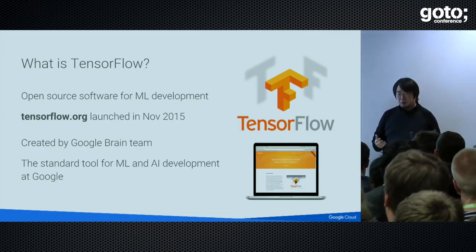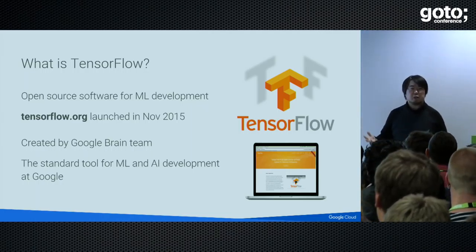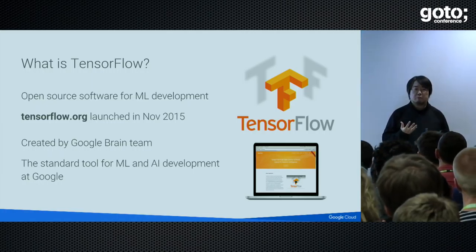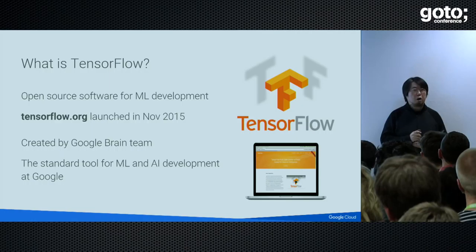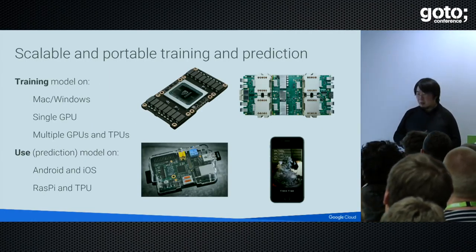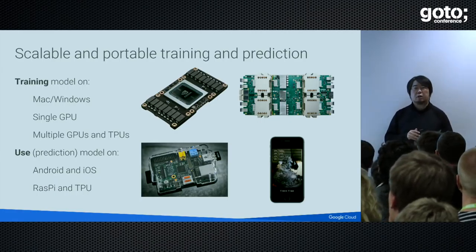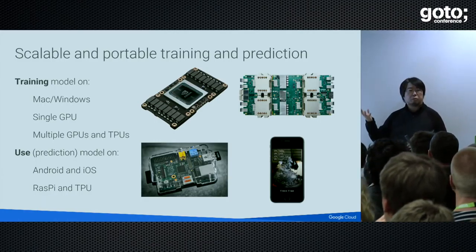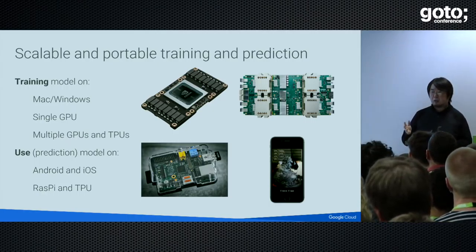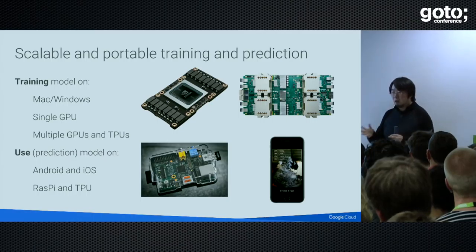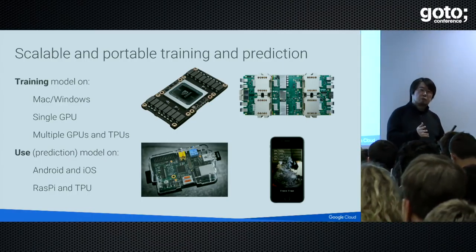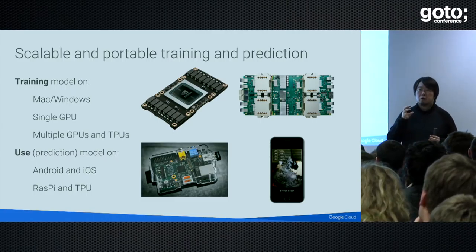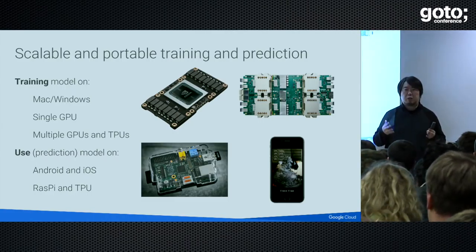What is TensorFlow? TensorFlow is an open-source machine learning software developed by the Google Brain Team. This is the standard machine learning tool used at Google for developing any new machine learning or AI services and products. We open-sourced it in November 2015. TensorFlow is scalable and portable — you can start trying TensorFlow on your Mac, Windows, or Linux laptop. Downloading TensorFlow is free. If you find TensorFlow may solve your problem, you can start using GPU — single GPU, 2 GPUs, 10 GPUs, or 100 GPUs — to get much higher accuracy.